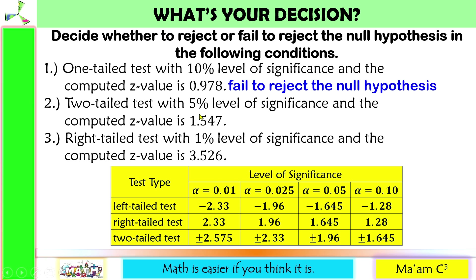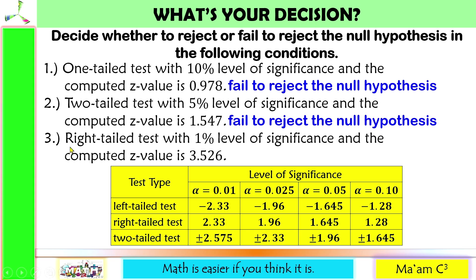Number 2 is a two-tailed test at 5% level of significance. The critical values are positive and negative 1.96. The computed Z value is 1.547. Applying the general rule, the absolute value 1.547 is less than 1.96. Therefore, fail to reject the null hypothesis. Number 3 is a right-tailed test with 1% level of significance, so the critical value is 2.33. If the computed value is greater than 2.33, reject.